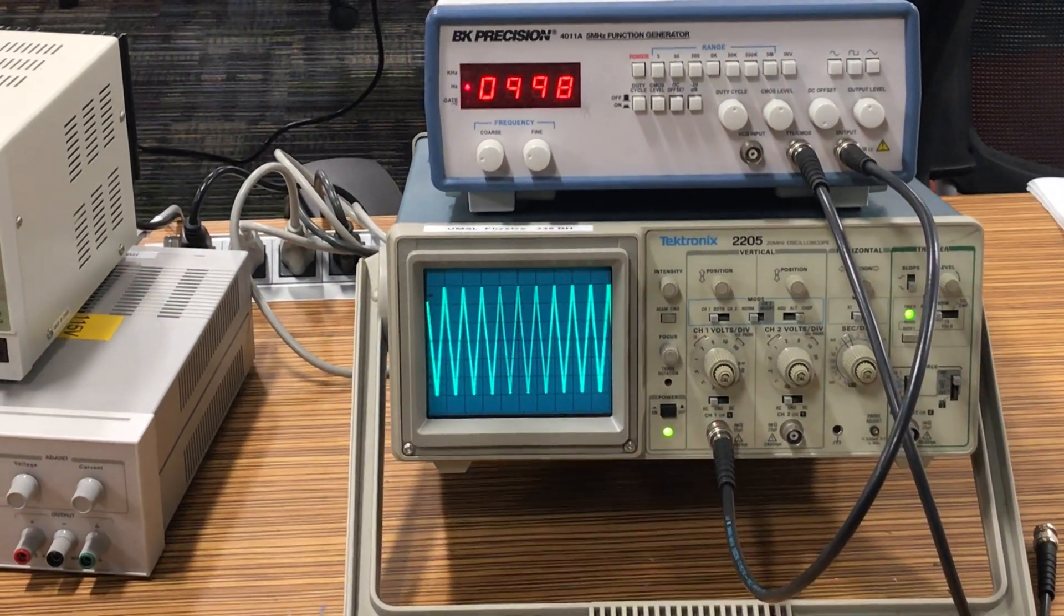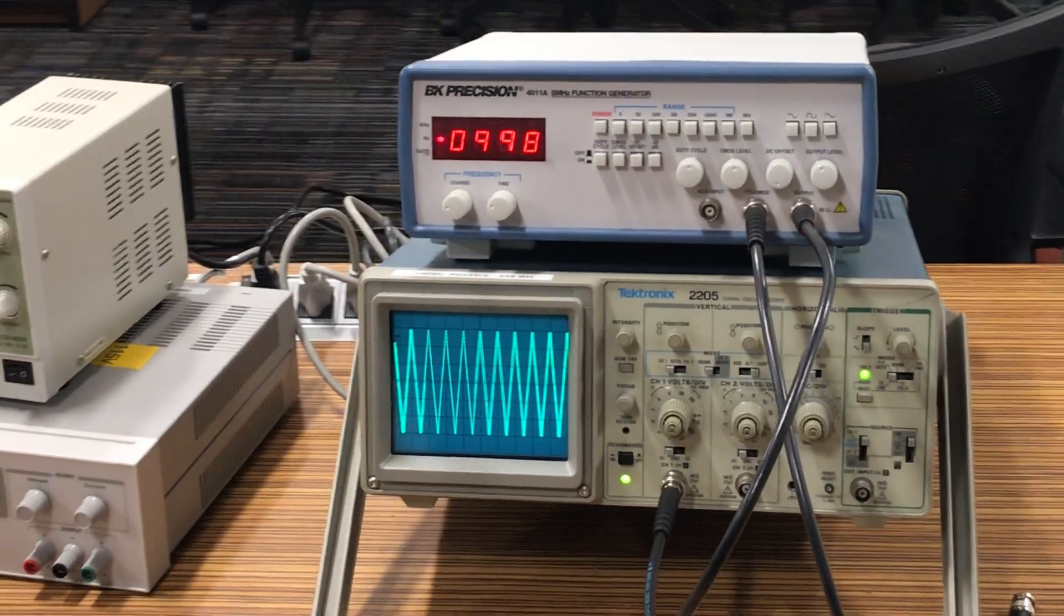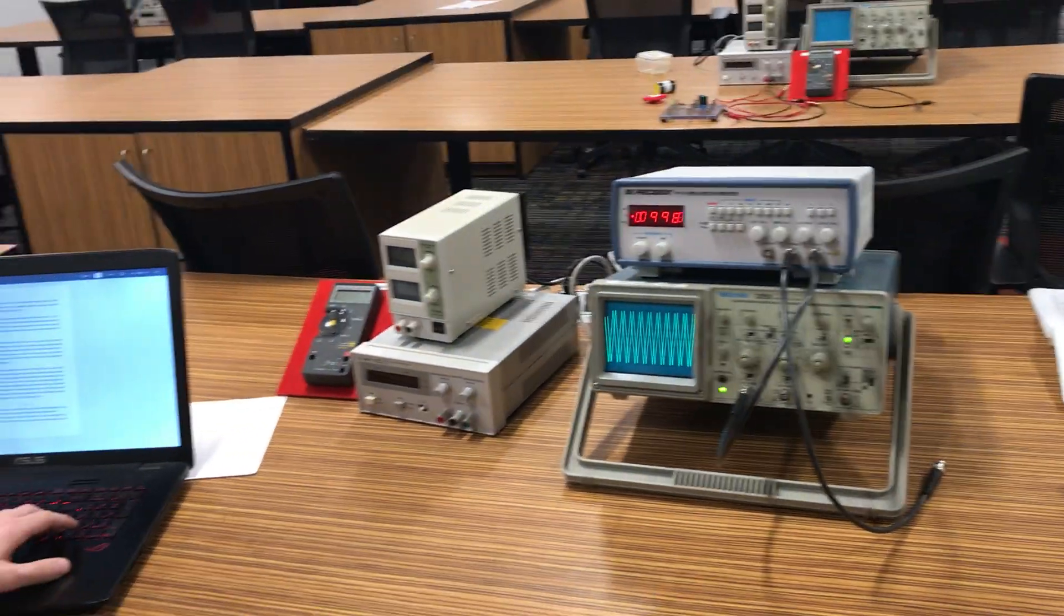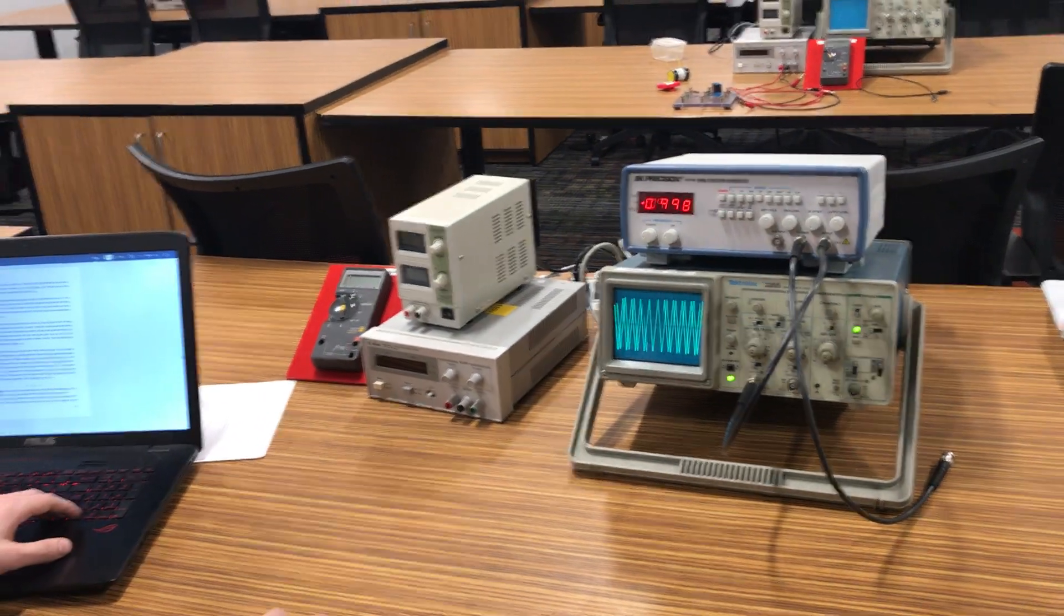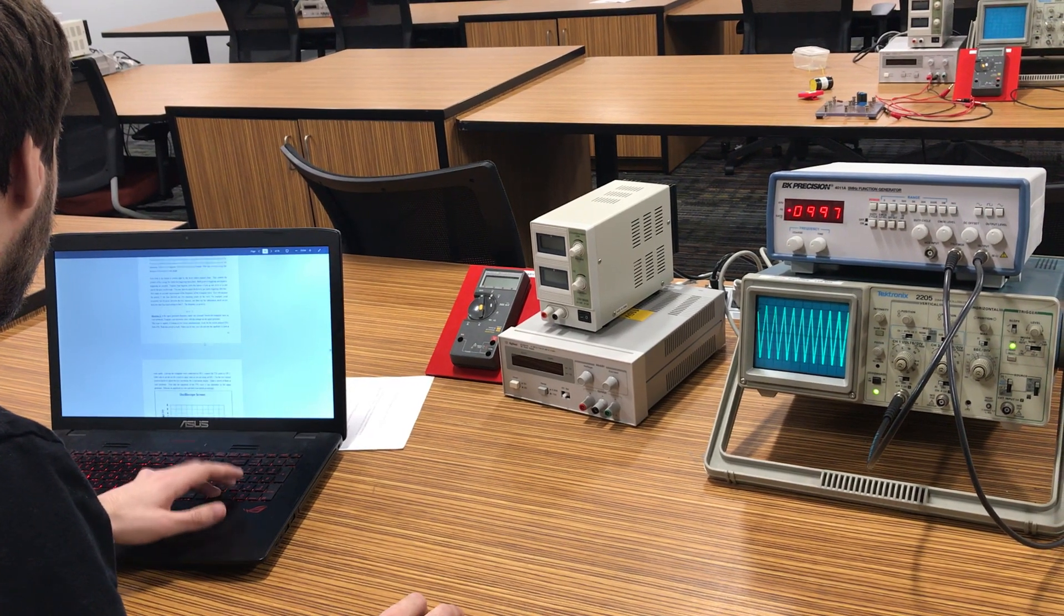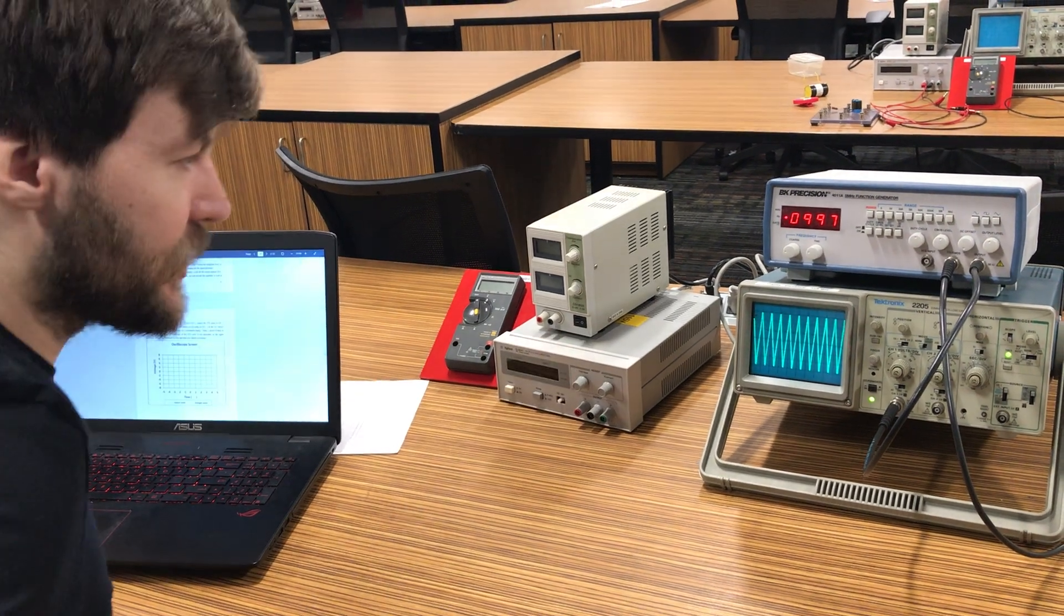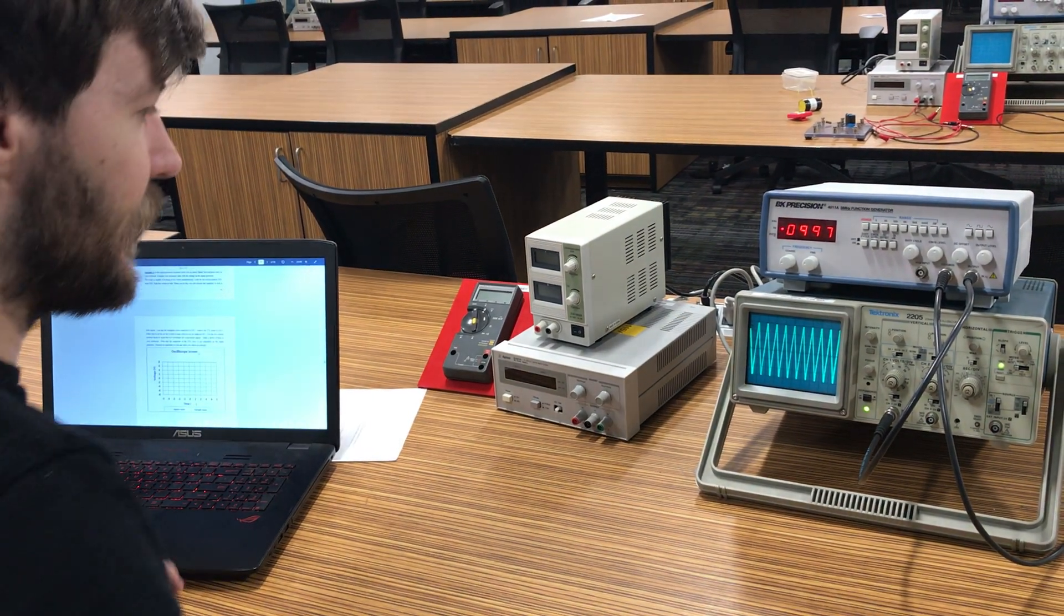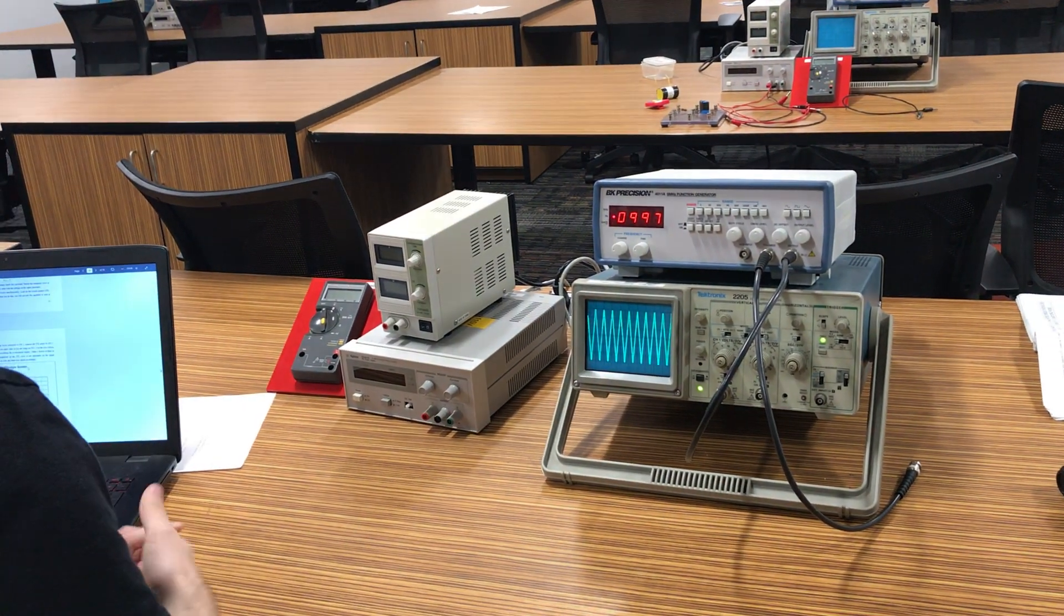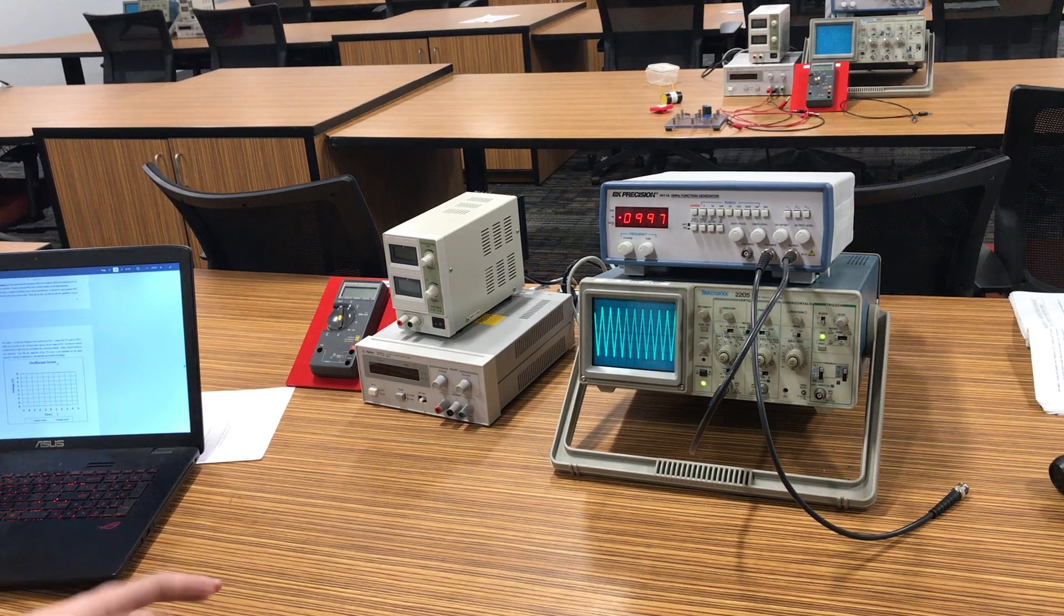Okay so we have this wave that we're looking at. We have the plus or minus six volts. We have it on one millisecond per division and the first thing you would do is just sketch this wave that we have right here. Then what we want to do is add a second channel in.